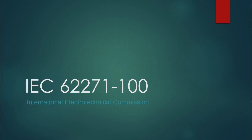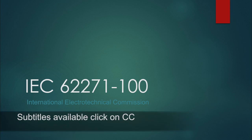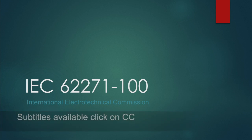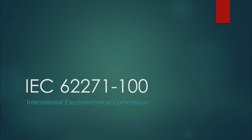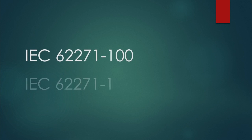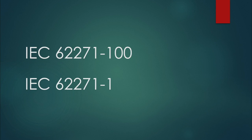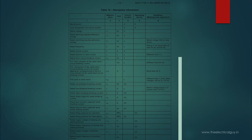In most countries, high voltage switchgears including circuit breakers are manufactured based on the IEC standard, i.e. IEC 62271-100. All the parameters marked on the nameplate of a high voltage circuit breaker are also as per this IEC and also as per IEC 62271-1. So let's first have a look at IEC.